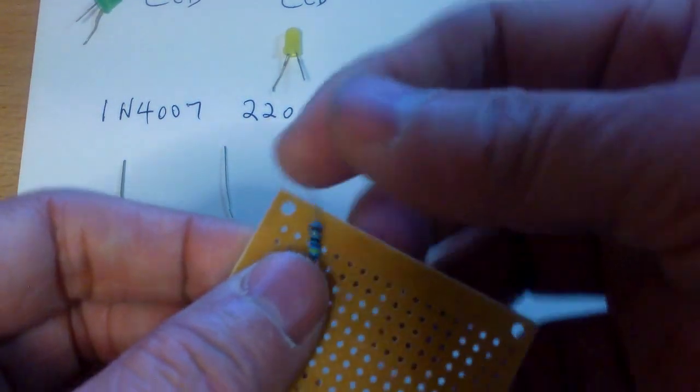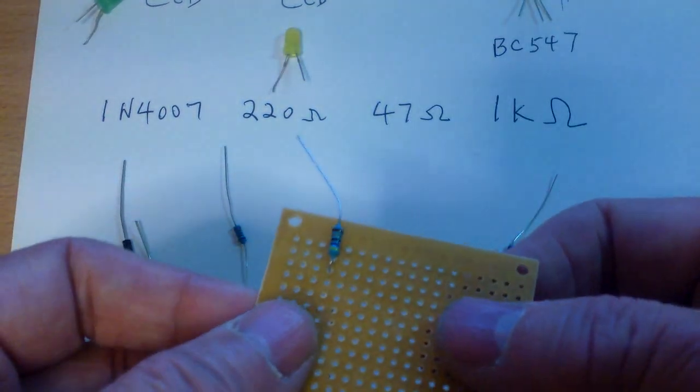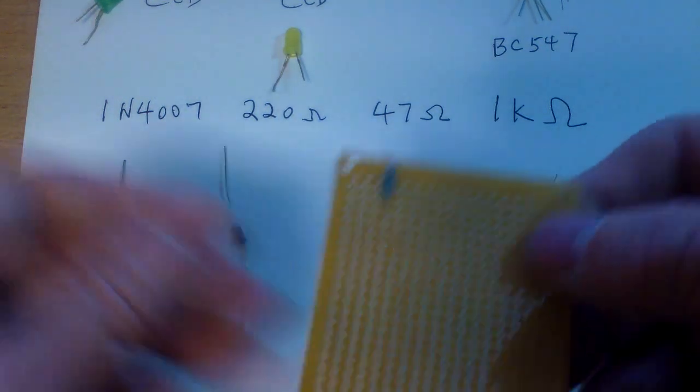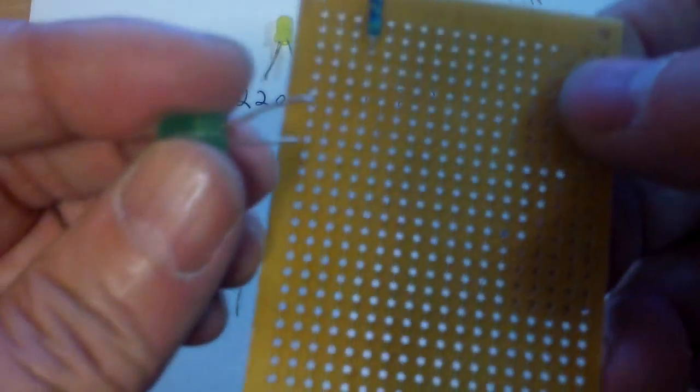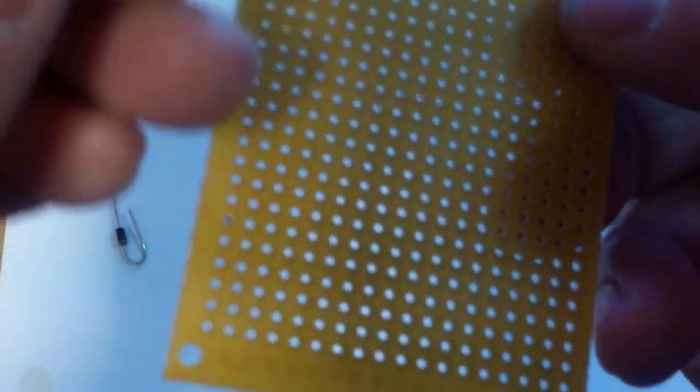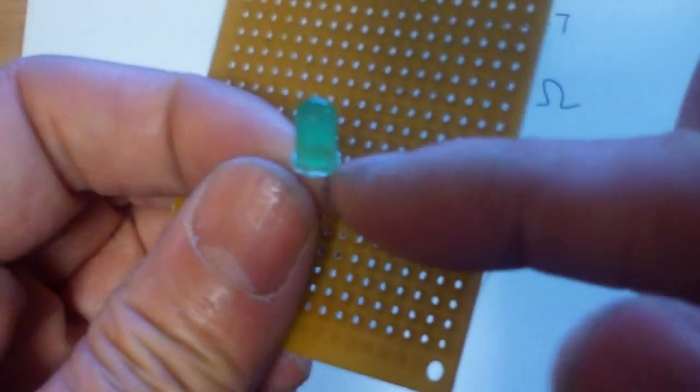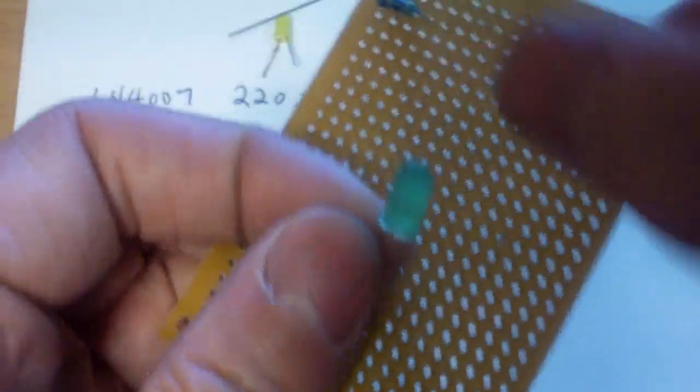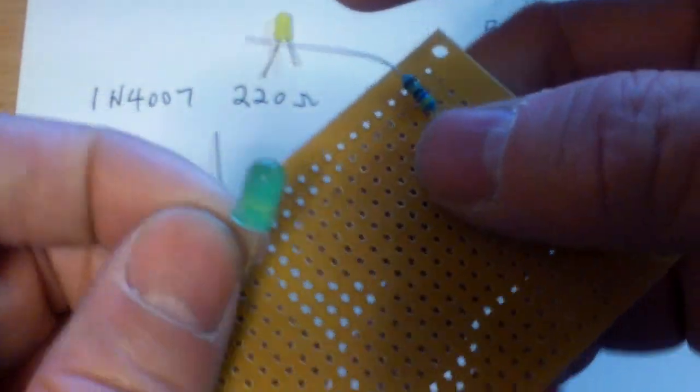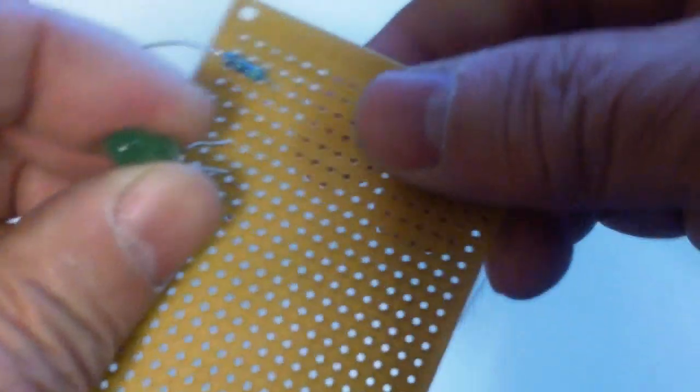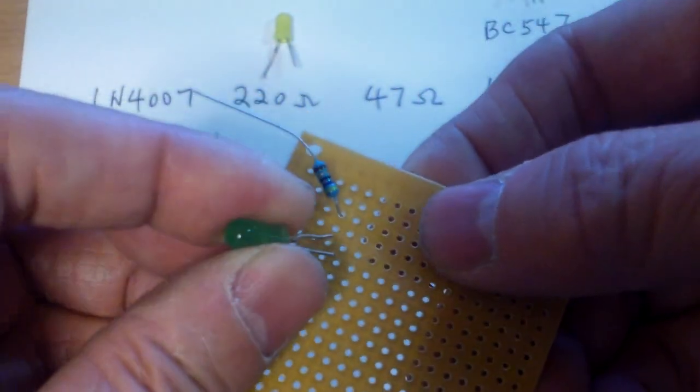This would be your positive rail and then you take your green LED, the green LED with the positive side towards the resistor. With the LED, there's a flat side and there's a round side. The flat side is negative, so you put your positive towards the resistor.